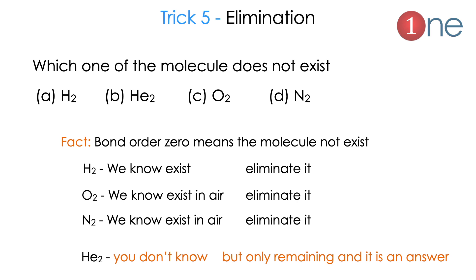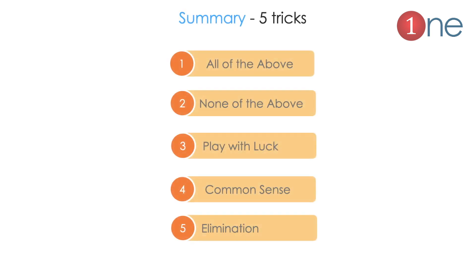Trick number five: use the elimination technique. Suppose the question is 'Which molecule does not exist?' Choices: A: Hydrogen, B: Helium, C: Oxygen, D: Nitrogen. We know hydrogen exists — eliminate it. Oxygen exists in the air — eliminate it. Nitrogen exists in the air — eliminate it. All three are eliminated, so the only remaining possibility is B: Helium, which must be the correct answer.